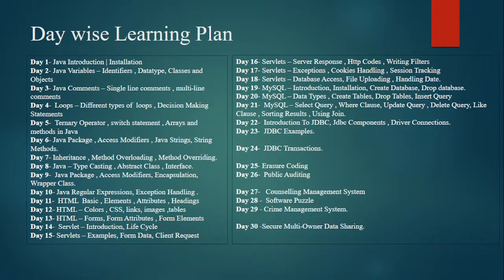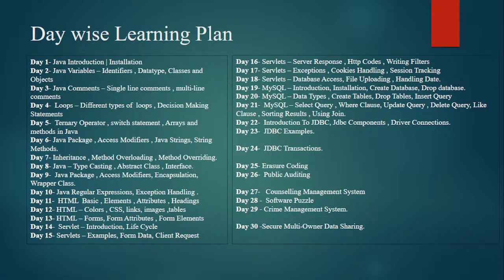On Day 5, I will discuss ternary operators, switch statements, arrays, and methods in Java. On Day 6, I will discuss Java packages, access modifiers, Java strings, and string methods. On Day 7, I will discuss inheritance — what it means, the different types including single-level, multi-level, and multiple inheritance — as well as method overloading and method overriding.